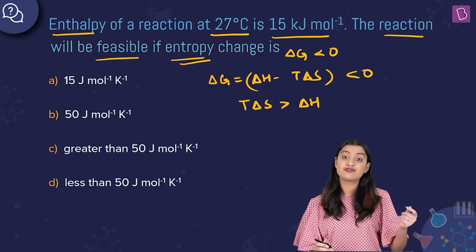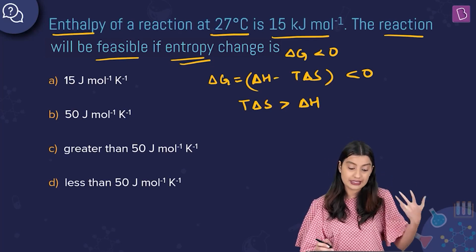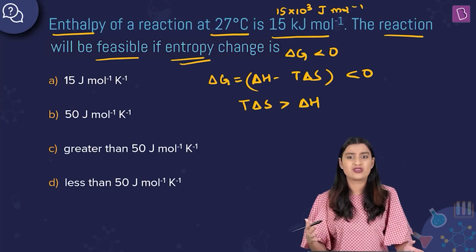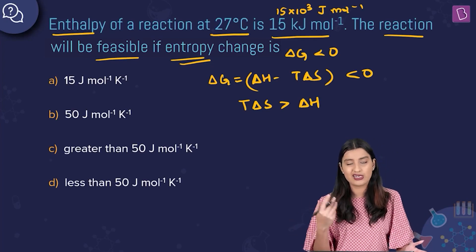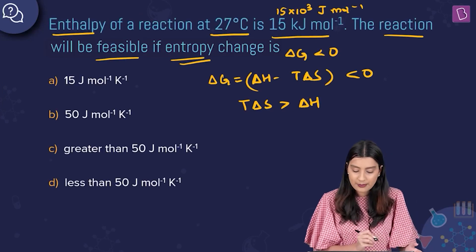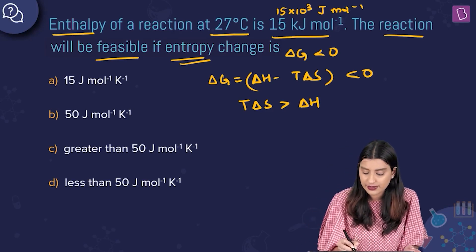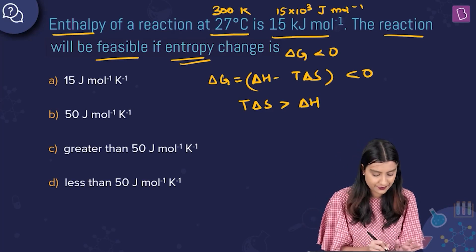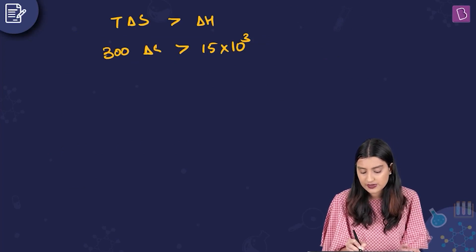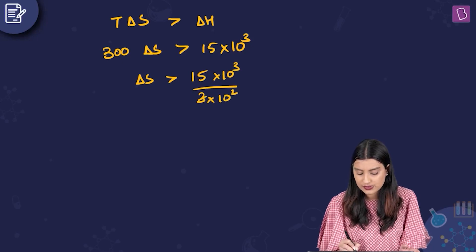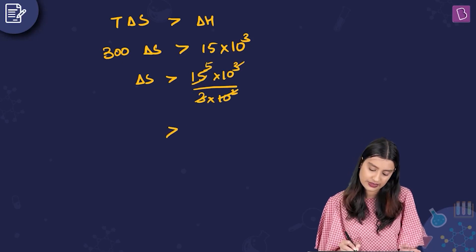ΔH = 15 kJ/mol = 15 × 10³ J/mol. The options are in joules. Temperature is 27°C = 300 K. So 300 × ΔS > 15 × 10³, which gives ΔS > 15 × 10³ / (3 × 10²) = 50.